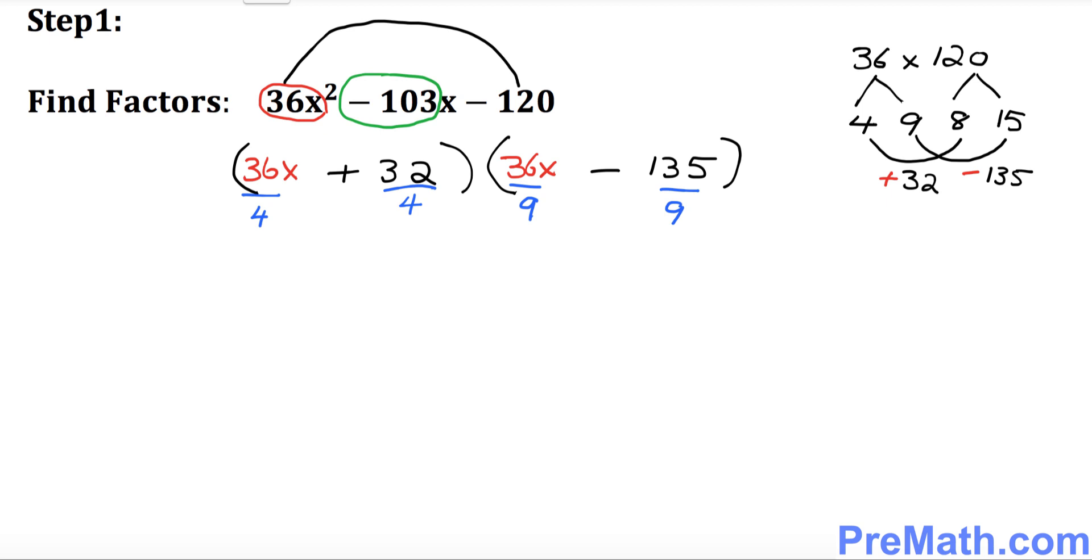So let's go ahead and now simplify. Divide into this thing: 4 goes into 36x how much time? It's going to become 9x plus 8 times over here in the second parentheses. That's going to be what? It's going to be 4x minus 15. So what is in step 1? We figured out the factors for this quadratic expression that turns out to be this one.